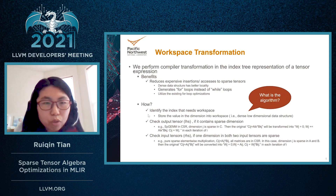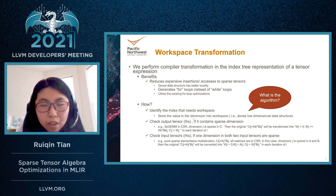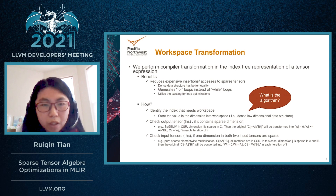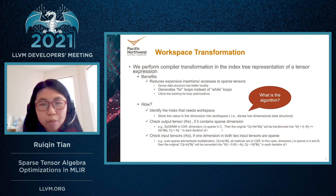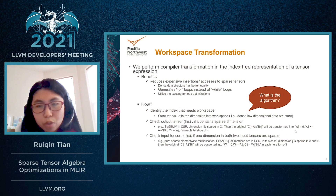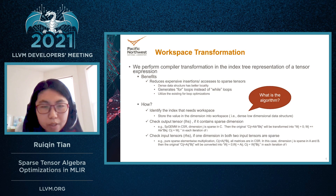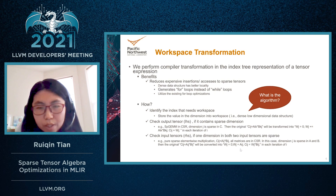To apply workspace transformation, we first identify the index that needs a workspace. Then we store values in the sparse dimension into the workspace, which is a dense, low-dimensional data structure. For the output, if it contains a sparse dimension — for example, if dimension j is sparse in matrix C stored in CSR format — the original expression is transformed into a set of operations. Similarly, if a dimension in both input tensors is sparse, we apply workspace transformation, as in an element-wise multiplication expression.